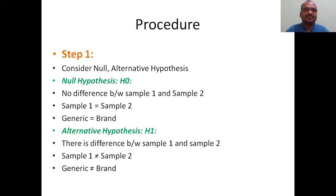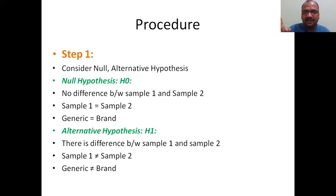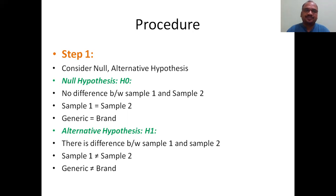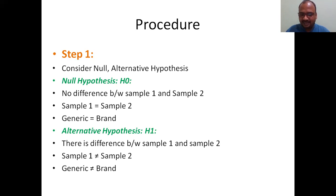Step 1 — Null hypothesis H₀: there is no difference between Sample 1 and Sample 2, i.e., Sample 1 = Sample 2, meaning generic drug = branded drug. Alternative hypothesis H₁: there is a difference between Sample 1 and Sample 2, i.e., Sample 1 ≠ Sample 2, meaning generic drug ≠ branded drug.